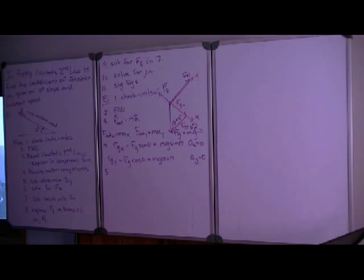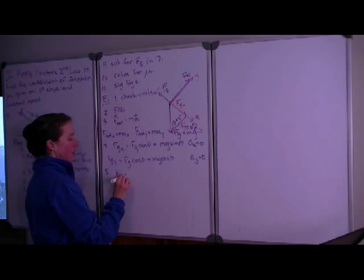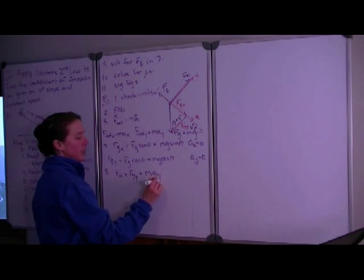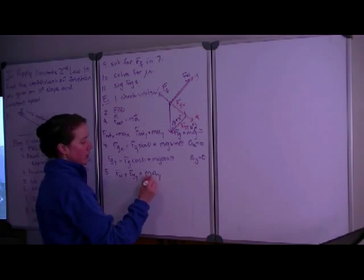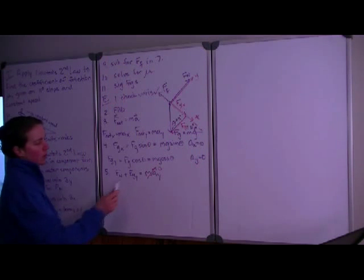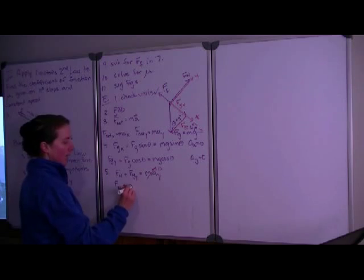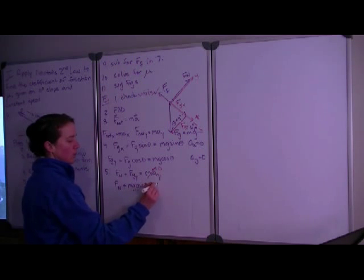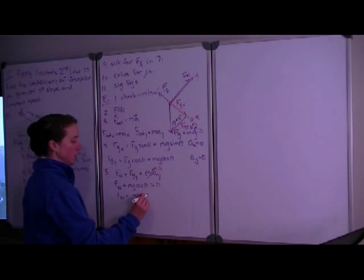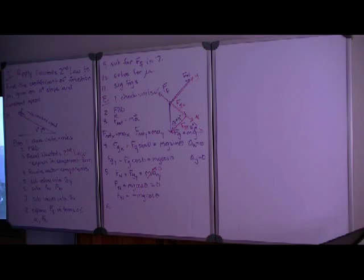Working with the y-component of Newton's second law: F_net_y equals the normal force plus the y-component of the gravitational force, which equals mass times acceleration in the y-direction. Since a_y is zero, that right-hand side goes to zero. Substituting our expression for the gravitational force in the y-direction, we get: normal force plus mg cos θ equals zero. Solving for the normal force gives N equals negative mg cos θ.